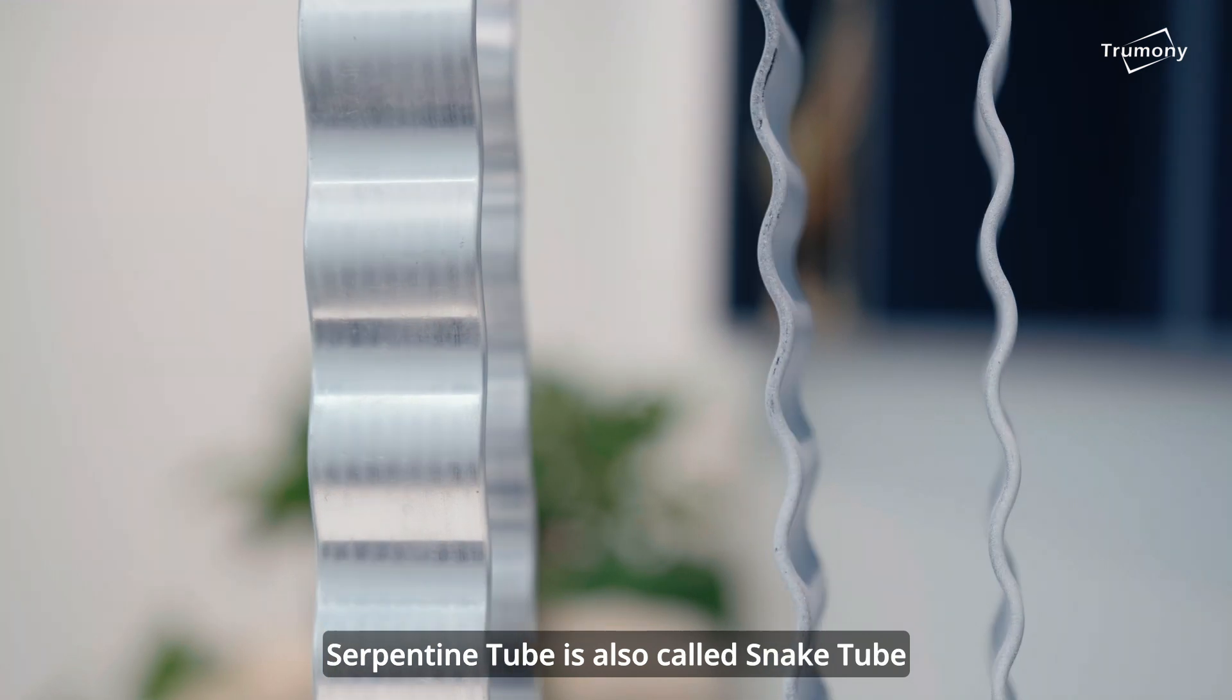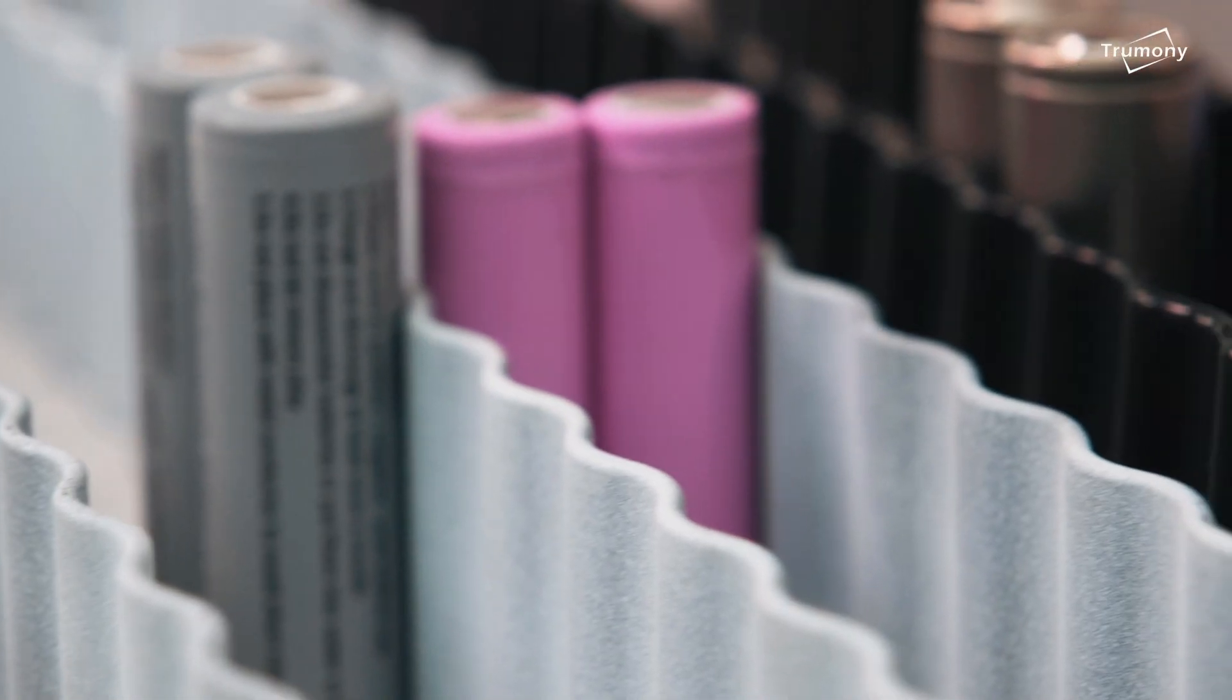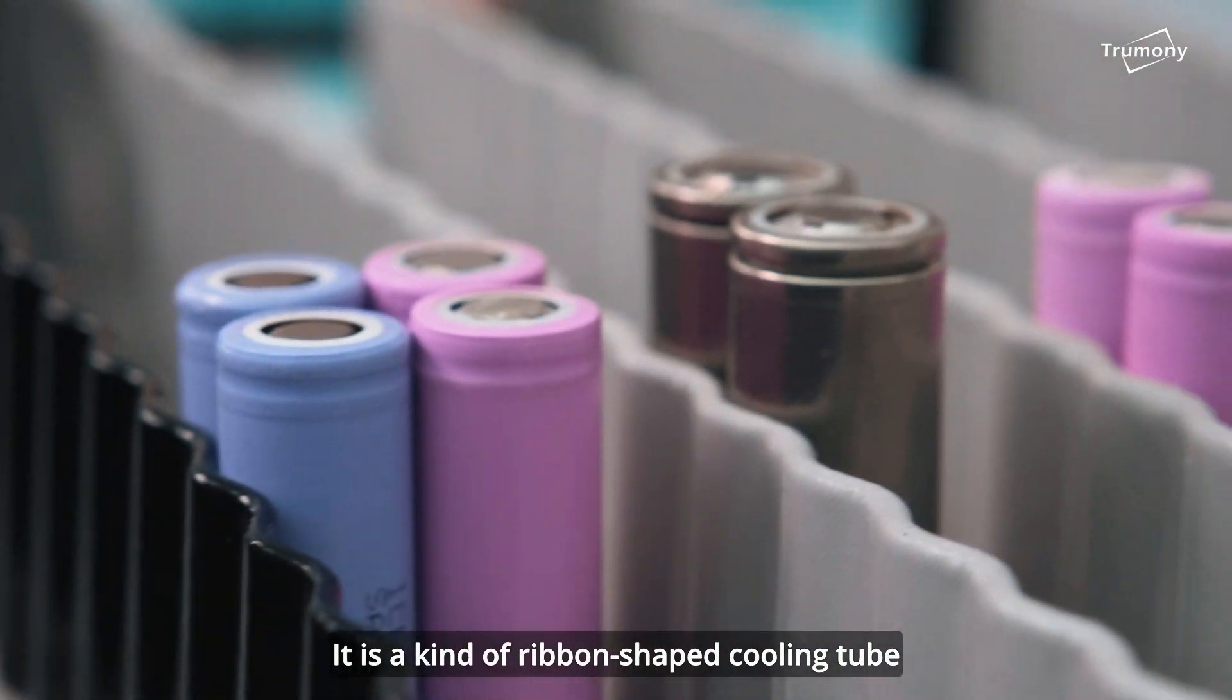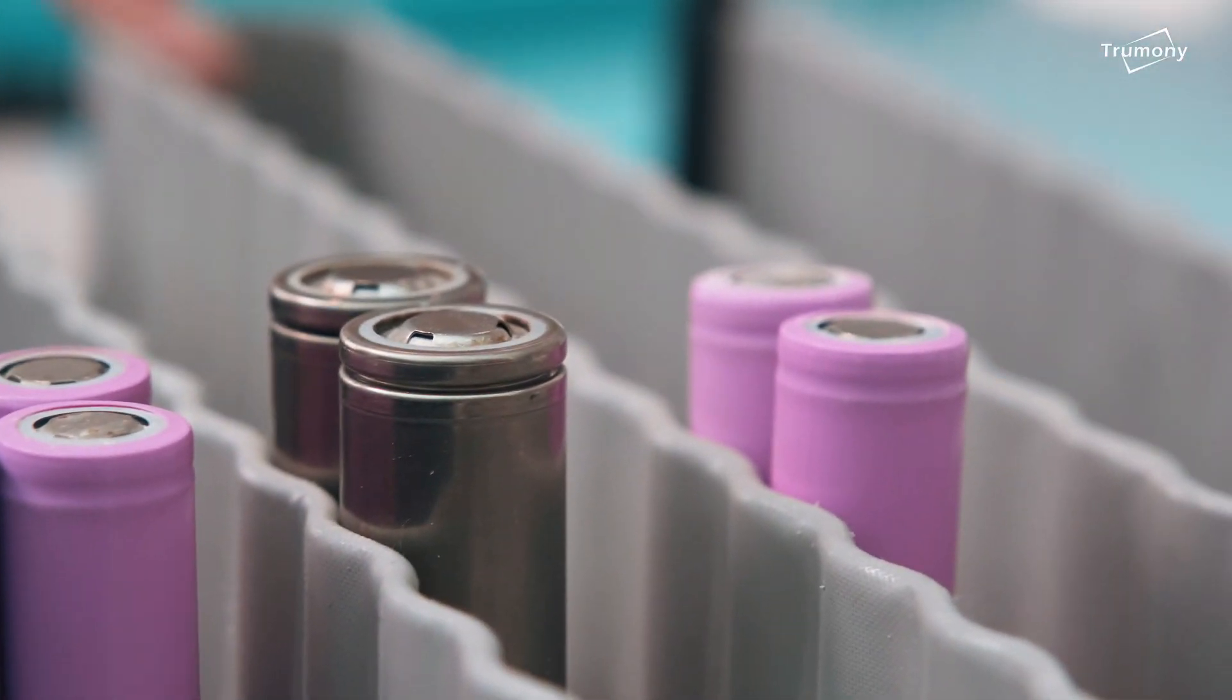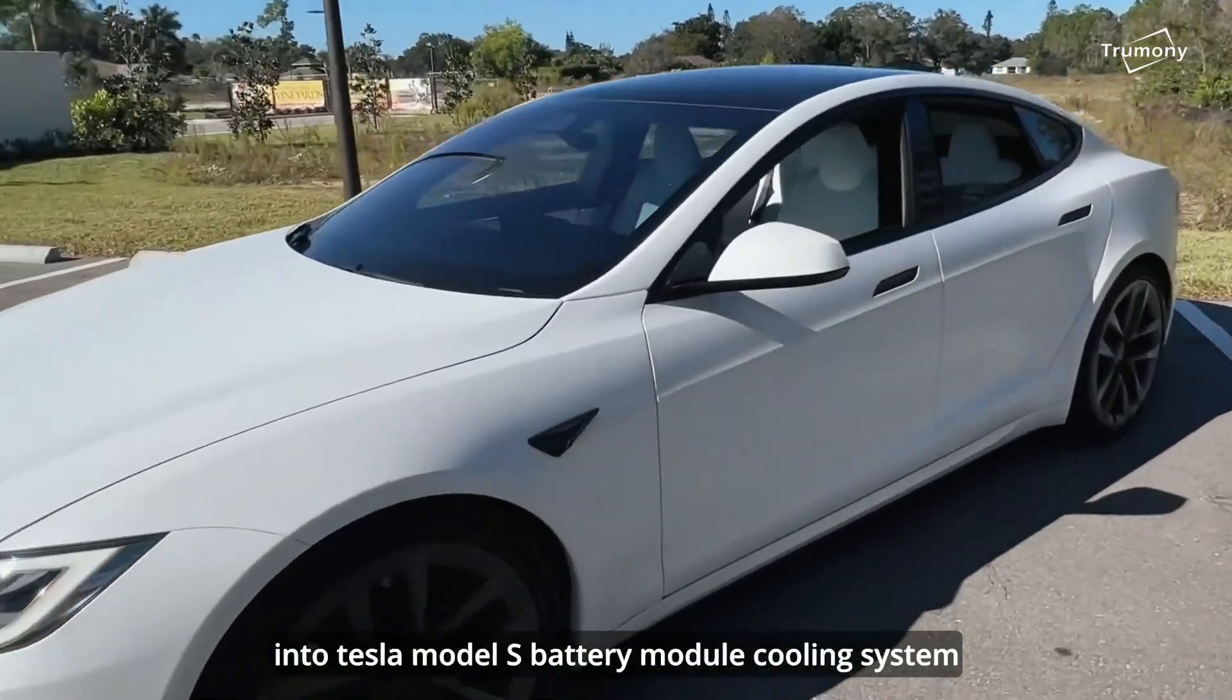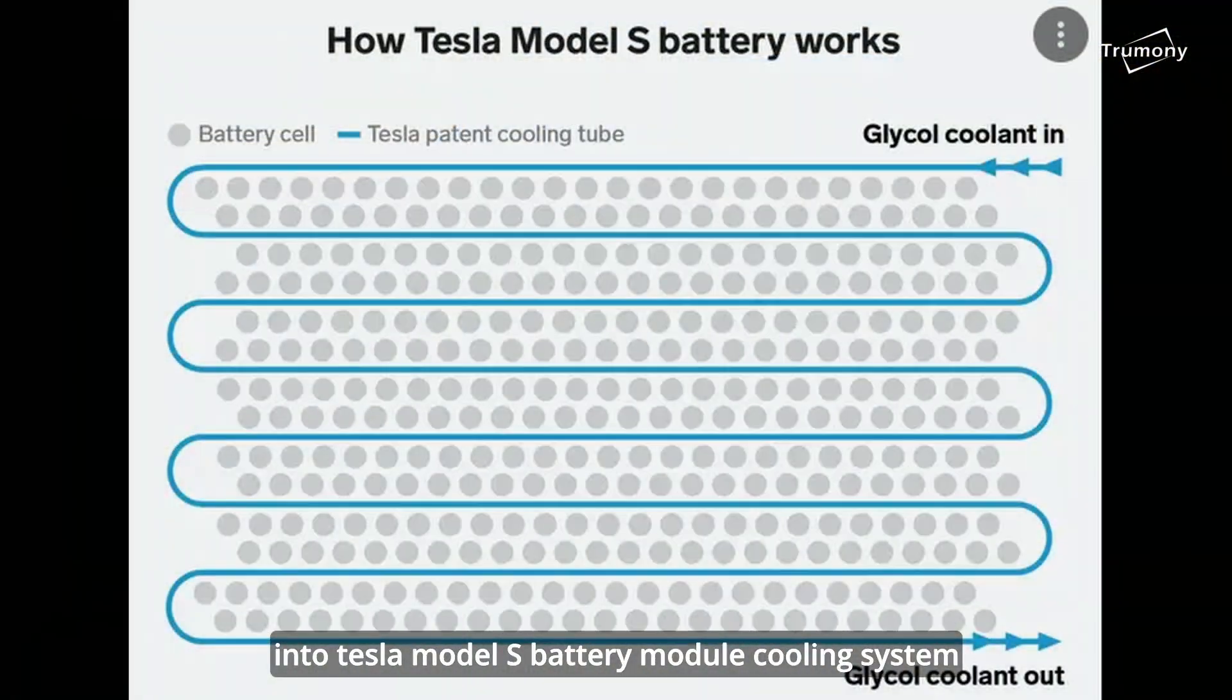Serpentine tube is also called snake tube. It is a kind of ribbon-shaped cooling tube. Currently, it is practically integrated into Tesla Model S battery module cooling system.